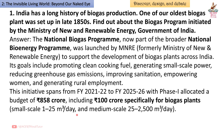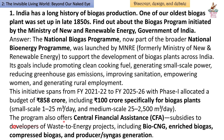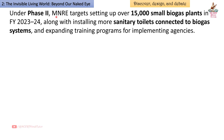The program covers small-scale (1 to 25 m³/day) and medium-scale (25 to 2500 m³/day) plants and offers central financial assistance (CFA) subsidies to developers of waste-to-energy projects including bio-CNG, enriched biogas, and producer syngas. Under Phase 2, MNRE targets setting up over 15,000 small biogas plants in FY 2023-24.